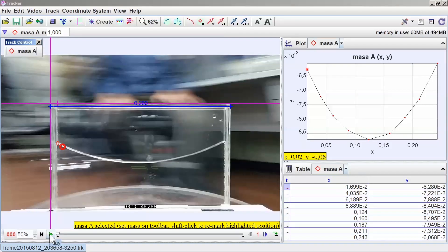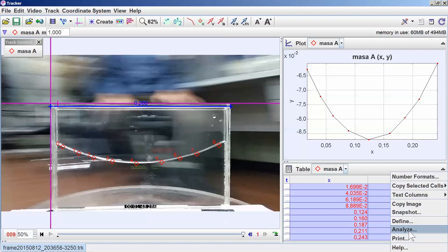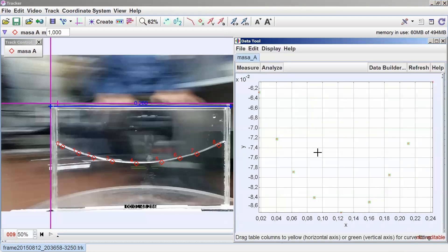The surface shape is studied using tracker video analysis. The characteristics of the parabola are obtained with this software.